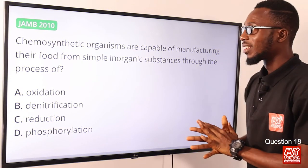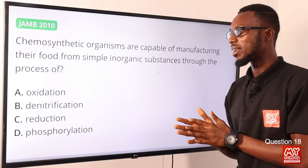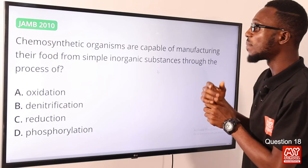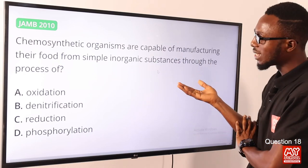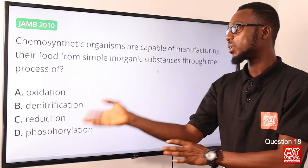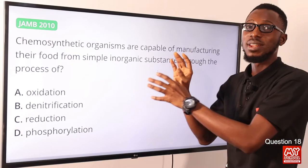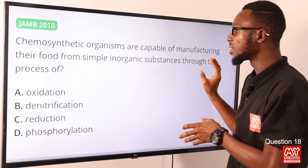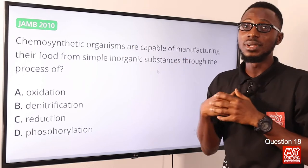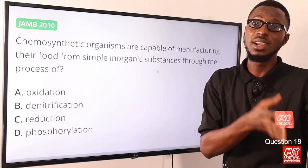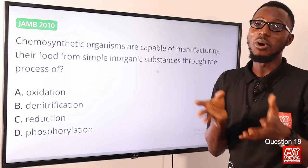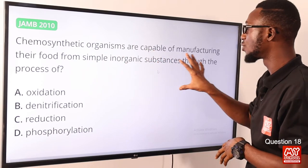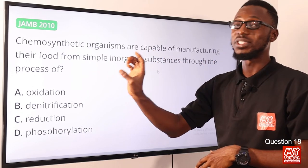Question 18: What are chemosynthetic organisms? Examples include Nitrosomonas, Nitrobacter, and iron bacteria. Chemosynthetic organisms are capable of manufacturing their food from simple inorganic substances through the process of oxidation. The oxidation of these inorganic substances serves as the source of energy in place of sunlight, allowing for the biological conversion of carbon-containing compounds into organic materials for use. The correct option is option A.